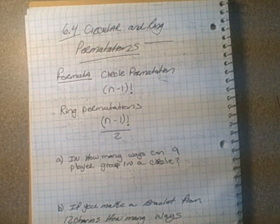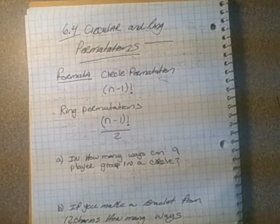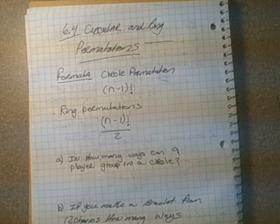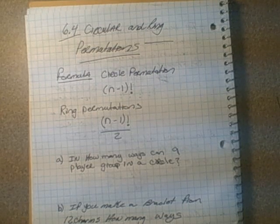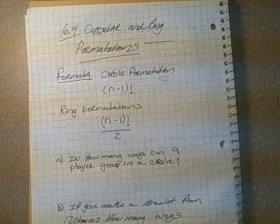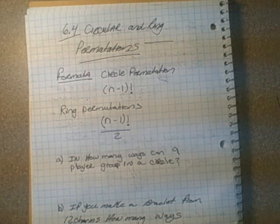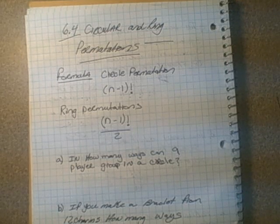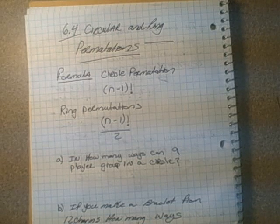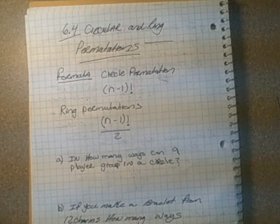This is section 6.4, circle and ring permutations. There's a formula for circle permutations and ring permutations. A ring is something you can flip over and back, which is why it has a slightly different formula than a circle permutation.